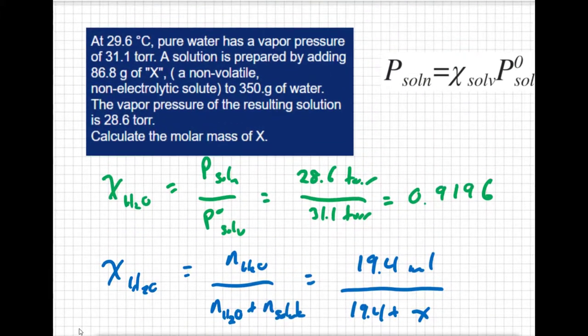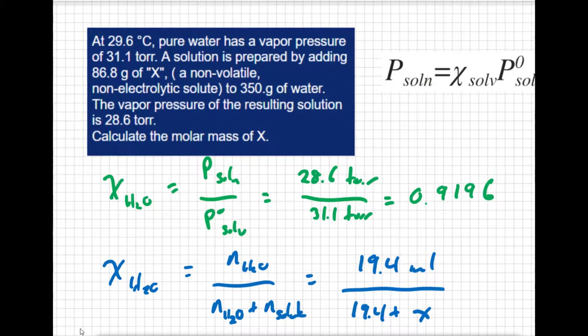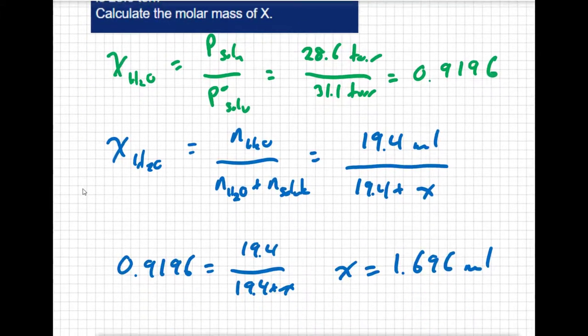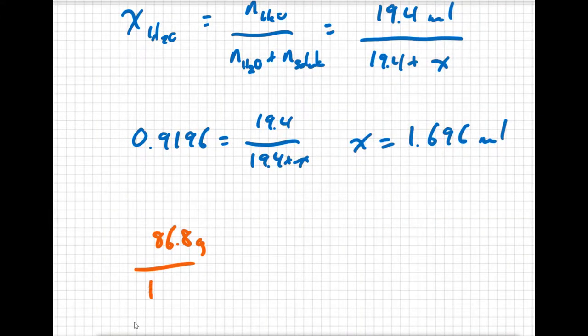Now the question is asking for the molar mass, so I can take my mass of solute, which is 86.8 grams, and divide it by my number of moles. And I get a molar mass of 51.2 grams per mole for my solute, which is a pretty clever way to find the molar mass of a substance and help identify what an unknown substance could be.